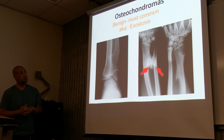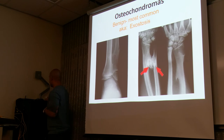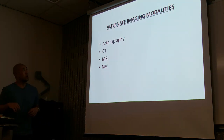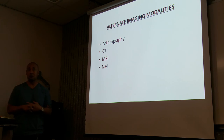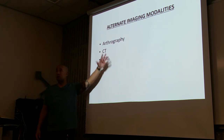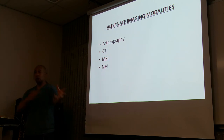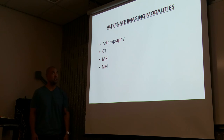Osteochondroma is also benign, also known as exostosis. There are different types of alternate imaging modalities to examine the bone: arthrograms — which are x-rays of the joints specific to those that have a synovial sac, such as shoulders, hips, and knees — and also CT, MRI, and nuclear medicine.